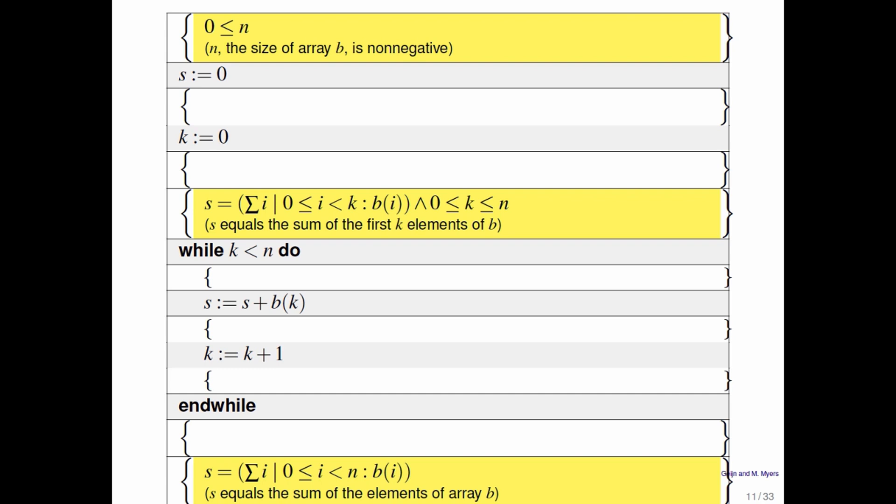Upon completion, s should be equal to the sum of the n elements of b. And before the while loop starts, we're saying here that s is equal to the sum of the first k elements of array b. And obviously k should be between 0 and n.